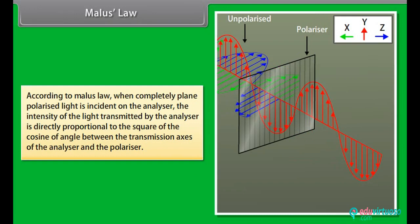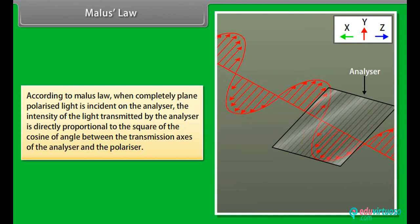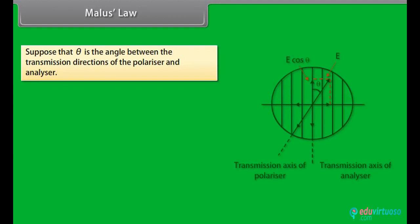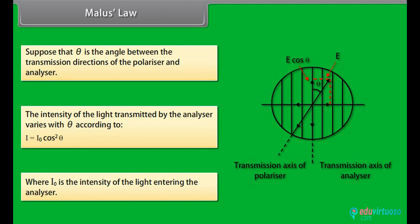Malus's Law: when completely plane polarized light is incident on the analyzer, the intensity of the transmitted light is directly proportional to the square of the cosine of the angle between the transmission axes of the analyzer and the polarizer. The intensity varies as I = I₀ cos²θ, where I₀ is the intensity of light entering the analyzer and θ is the angle between the transmission directions of the polarizer and analyzer.